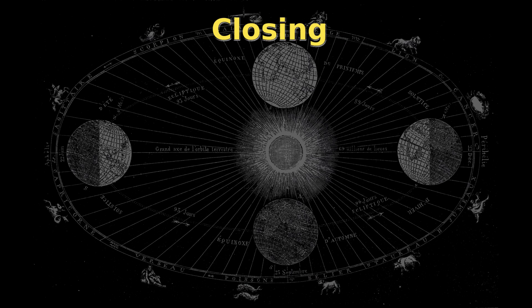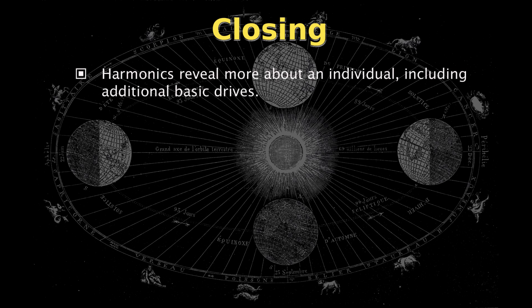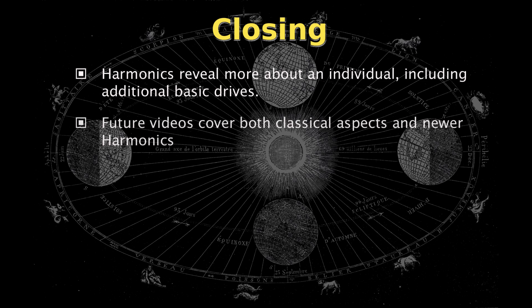Vibrational astrology invokes harmonics because it explains things that conventional astrology has been missing. In my upcoming videos, I'll be covering traditional aspects because they still provide insight, and I'll cover newer harmonics, many of which help us understand basic drives that traditional aspects don't. For example, an individual can have a very strong 11th harmonic pattern. It doesn't matter whether they are a Taurus, a Sagittarius, or any other sign.